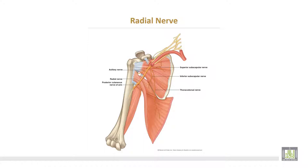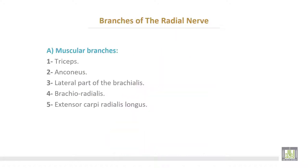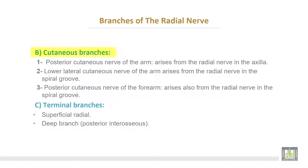The radial nerve arises from the posterior cord of the brachial plexus, then is directed downwards and backwards in the spiral groove of the humerus. Muscular branches go to the triceps, the lateral part of brachialis, brachioradialis, and extensor carpi radialis longus. Cutaneous branches include: number one, the posterior cutaneous nerve of the arm, arising from the radial nerve in the axilla; and number two, the lower lateral cutaneous nerve of the arm, arising in the spiral groove.